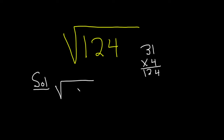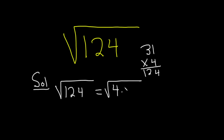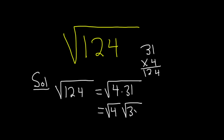So this is the square root of 124. That's equal to — well you can factor it now — it will be the square root of 4 times 31. And then you can break this up into two square roots: the square root of 4 times the square root of 31.